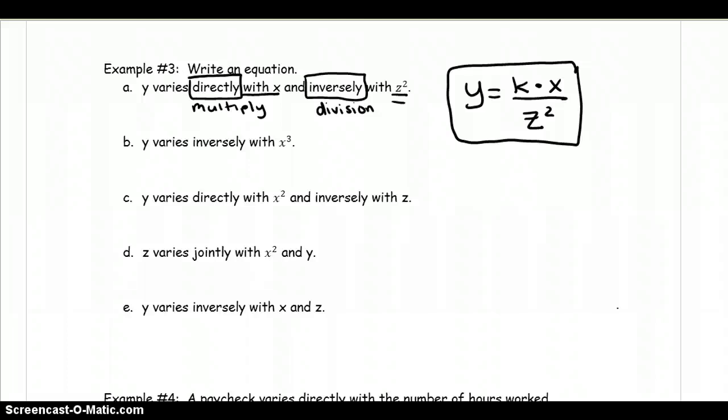Let's look at the next one. It says y varies inversely. So I'm thinking divided. We're going to divide by k. So we have k divided by x to the third. So directly is once again, multiplication, and inversely is a division relationship.